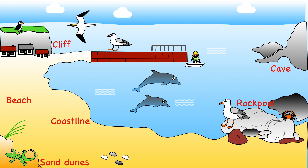The coastline is a very harsh place for plants and animals to live. Salty spray from waves, strong winds, sun, rain and changing tides are all extreme weather conditions you might experience here.